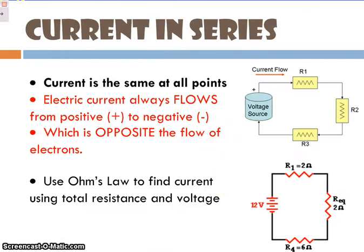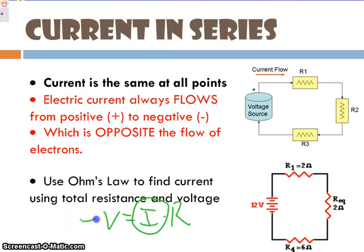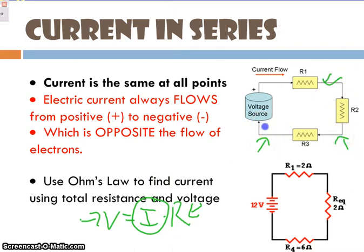If we look at current in series, current is the same at all points. Going back to Ohm's Law — V equals I times R — if we wanted to calculate current, we could find the voltage and resistance and get the current, measured in amperes. It doesn't matter if I ask you the current at this point, this point, or this point on my series circuit, because every single electron had to take the same path. So there should be no difference in current no matter where I measure it.